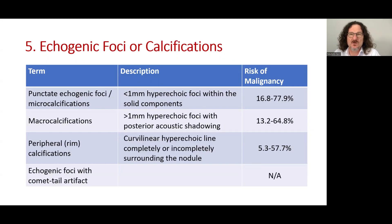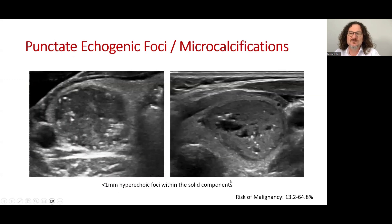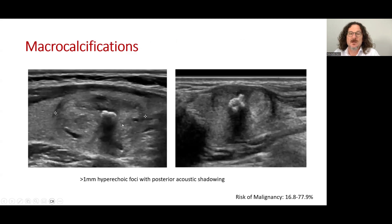The fifth descriptor is echogenic foci and calcifications. Punctate echogenic foci and microcalcifications are defined as less than one millimeter hyperechoic foci within solid components. Macrocalcifications are more than one millimeter with posterior acoustic shadowing. Calcifications may be peripheral, as a curvilinear hyperechoic line completely or incompletely surrounding the nodule. Echogenic foci with comet-tail artifact is another group. Two malignant examples show scattered hyperechoic foci less than one millimeter in diameter, and another shows macrocalcification with acoustic shadowing.